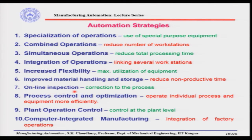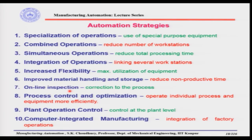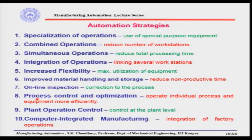The next point is online inspection — the correction of processes. For example, an adaptive control system can be built into the machine so that errors produced during the process are identified and rectified by the adaptive control system inside the machine itself. In a flow line where different machines are linked together, an inspection machine in between will inspect each part produced and signal what errors are occurring and need to be rectified.